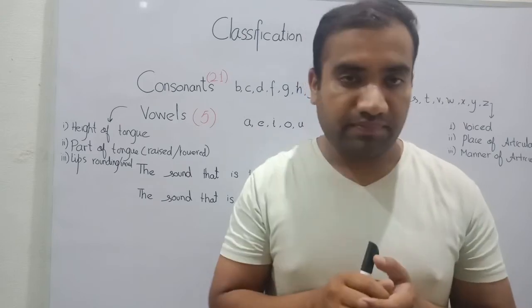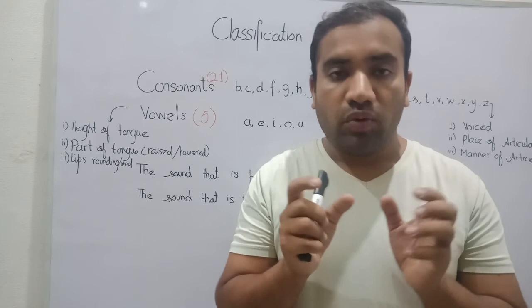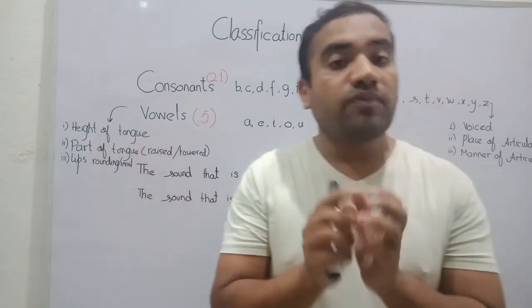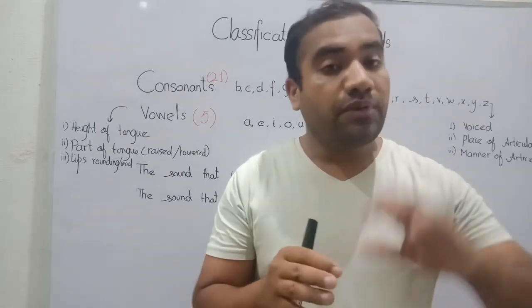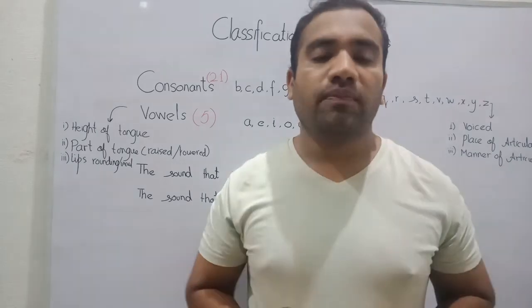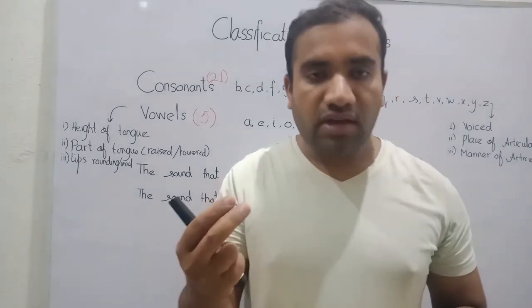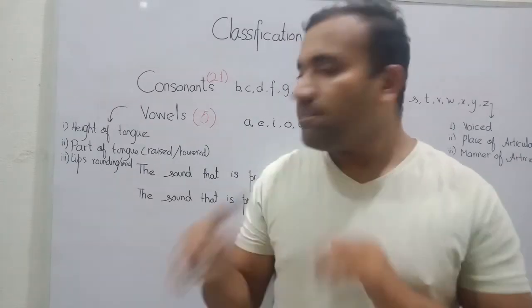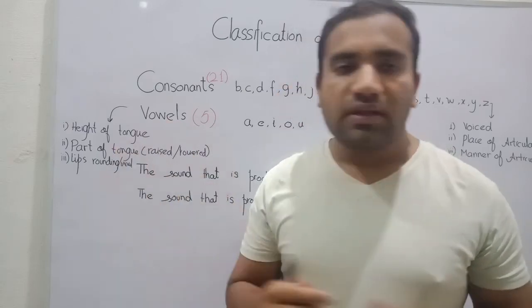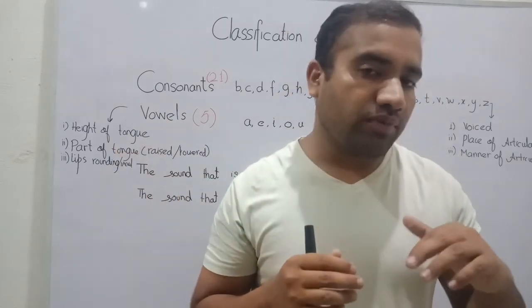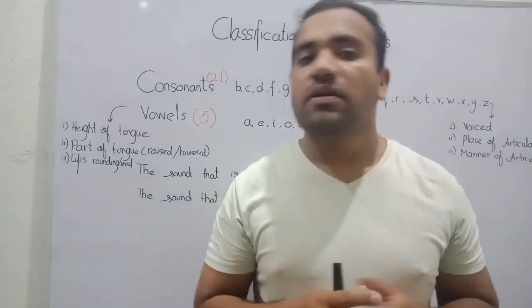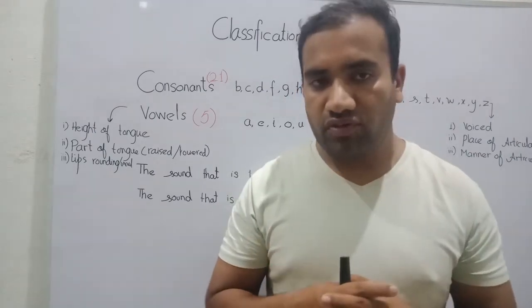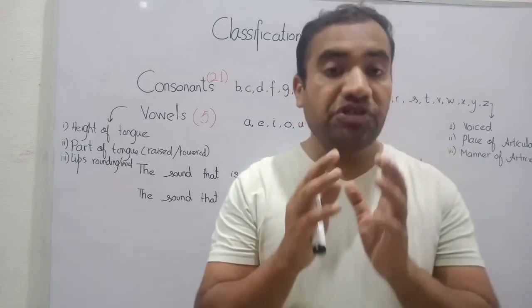The second factor is the part of the tongue — which part of the tongue is raised or lowered. The tongue has multiple parts: the blade, the tip, the front, the back, and the middle. Which part is raised and which is lowered is the second mechanism that helps us differentiate one vowel sound from another.